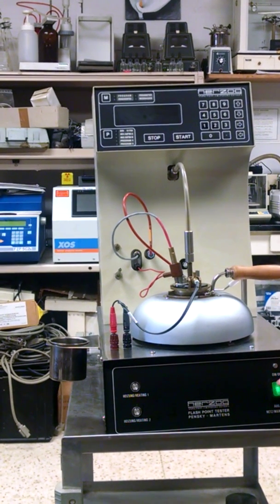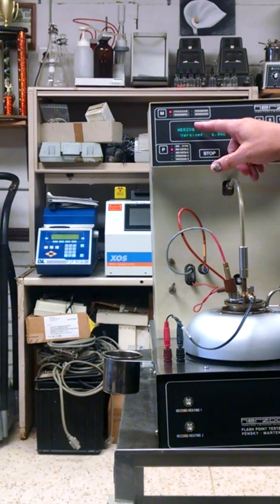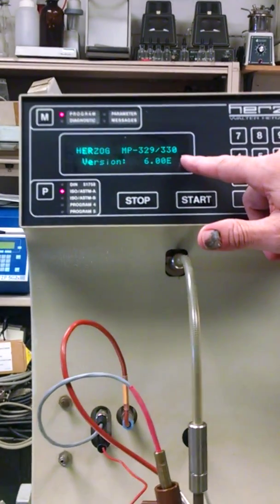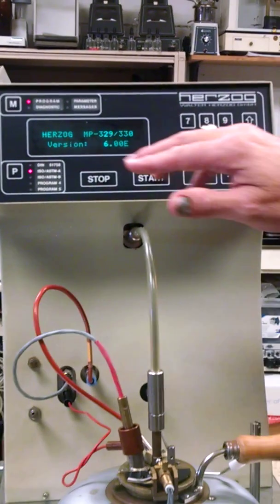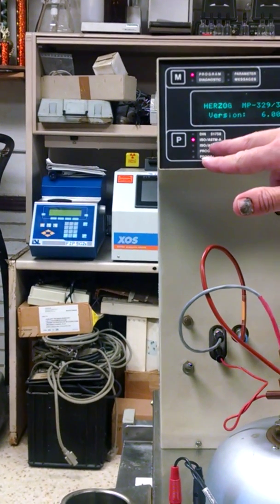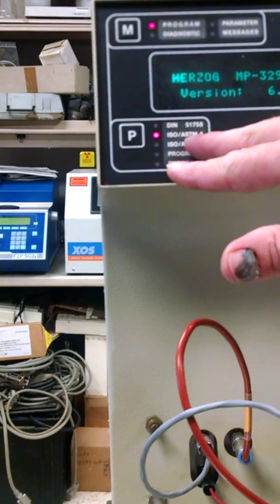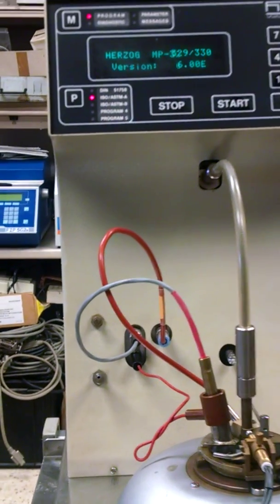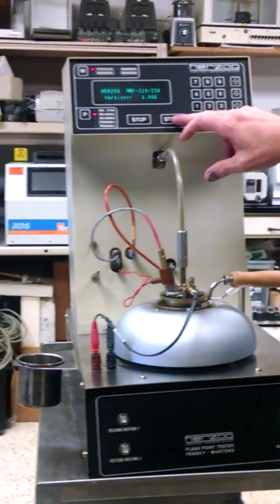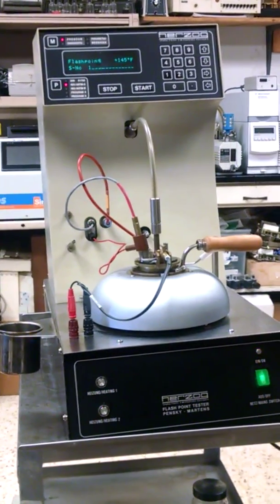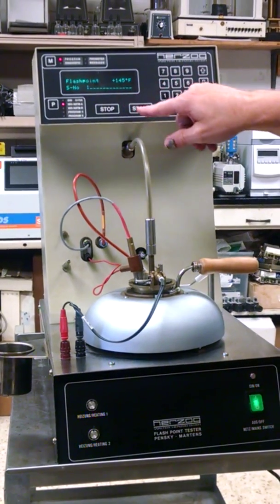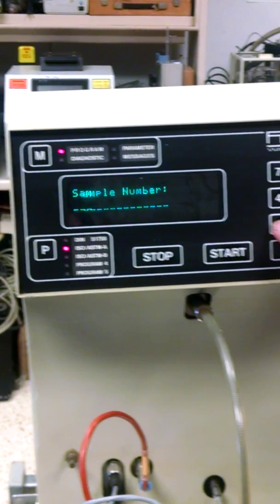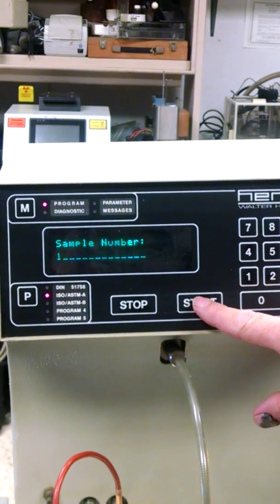Then we're going to turn it on and you can say it says Herzog MP329-330 version 6.00E. Now it's got method A and method B. We've got it set on method A right now. The difference between method A and method B has to do with the stir speed. So what we want to do is first we want to hit start and then it's going to say your number. We're just going to put in number one. We're going to hit start again. It's going to sample number. We're going to put in sample one and we're going to hit start again.